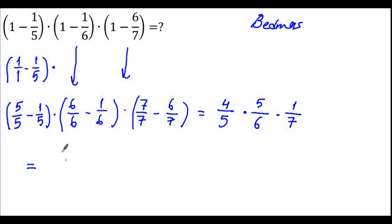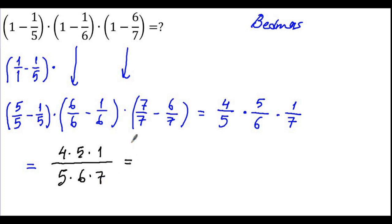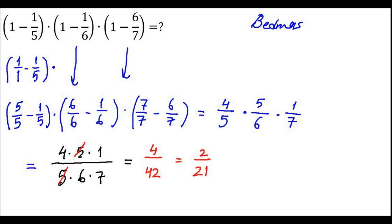Another way: multiply the numerators first — 4 times 5 times 1 — over the denominators — 5 times 6 times 7. Then simplify: 5 and 5 cancel to give 1 and 1, leaving 4 over 42. Both are divisible by 2: 4 over 2 is 2, 42 over 2 is 21. So we confirm the answer is 2 over 21.